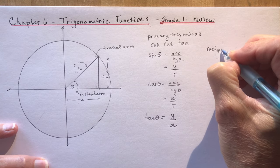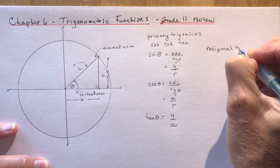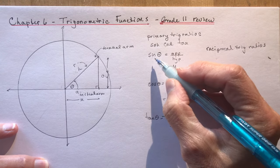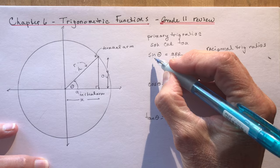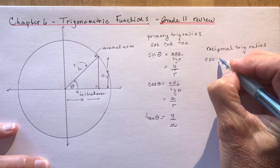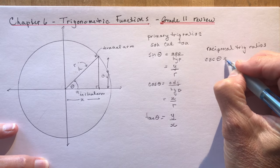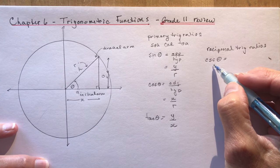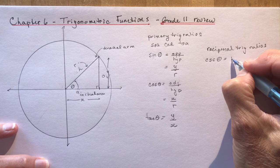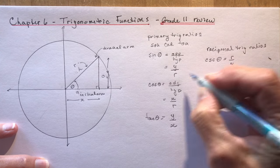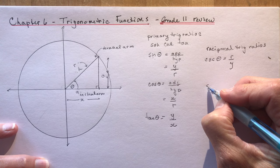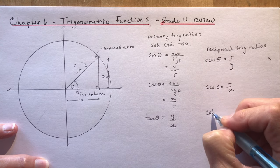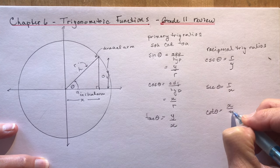The reciprocal of sine is cosecant theta — students often mix this up thinking cosecant goes with cosine, but no: sine goes to cosecant theta, which is R over Y. Cosine goes to secant theta, which is R over X. And tan goes to cotangent theta, which is X over Y. That covers the basic understanding of all six trigonometric ratios.